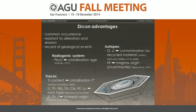We also have access to the degree of contamination by recycled material from the oxygen and lithium isotopes. We have access to the magmatic, crustal, or mantle origin through the hafnium isotopes. And also from the trace element content, we have access to the crystallization temperature from titanium, but also to an idea of the rock type in which the zircon has been formed from a list of different elements. We can even have an idea of the oceanic or continental origin of the zircons from uranium, thorium, and yttrium content.